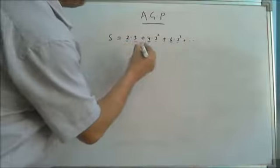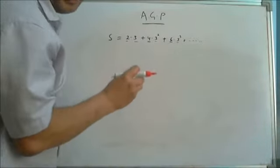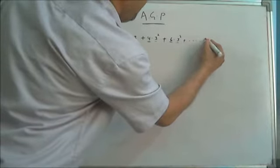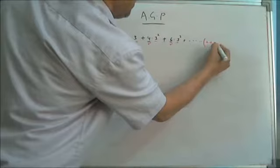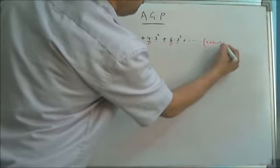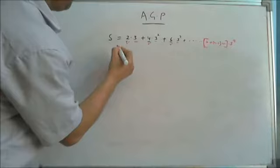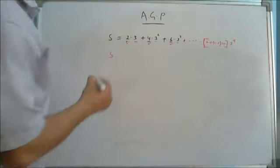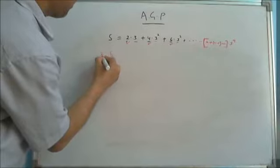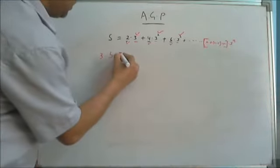How to find the sum of AGP problems. I am finding here the nth term. Each term consists of two things: one AP and one GP. The nth term of the AP — see here 2, 4, 6 is in AP, so the nth term will be 2 + (n−1)×2. The technique I follow is to multiply S with the common ratio of the GP, which is 3 here — 3, 3², 3³ — so the common ratio is 3.